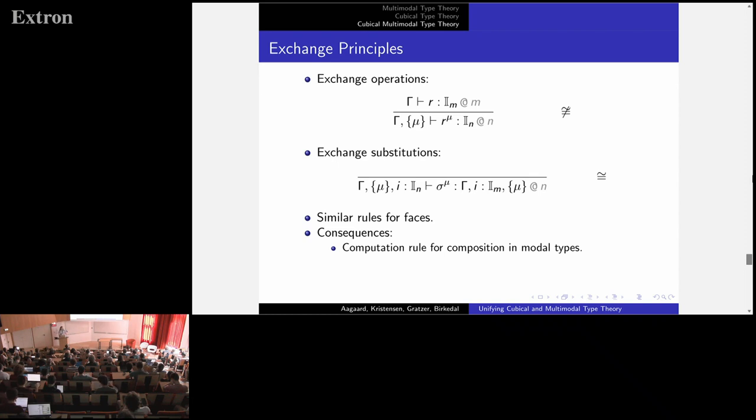The consequence of these, first, the computation rule for composition in modal types is now well-typed. And secondly, we get a new extensionality principle, modal extensionality. It's something which is not true in base MTT, but is now true in cubical MTT.